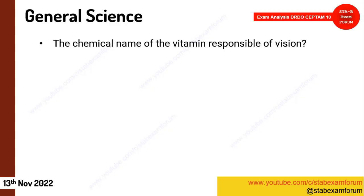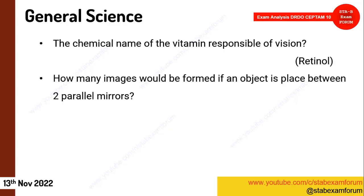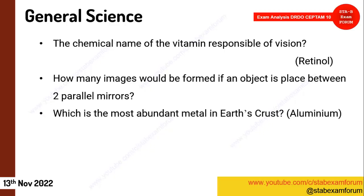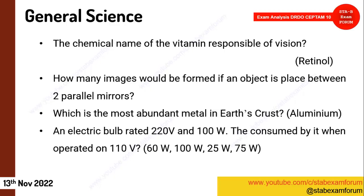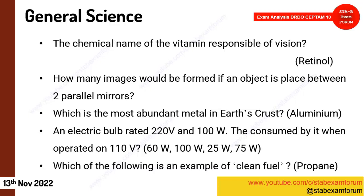From deficiency diseases: 'What is the chemical name of the vitamin responsible for vision?' — we know vitamin A is also called retinol, so the answer was retinol. One physics question: 'How many images would be formed if an object is placed between two parallel mirrors?' Then from chemistry: 'Which is the most abundant metal in the Earth's crust?' — the answer is aluminium. One numerical on power consumption also came.